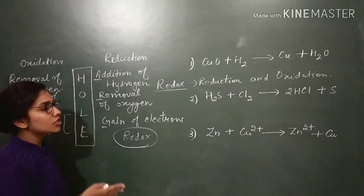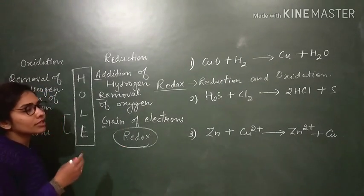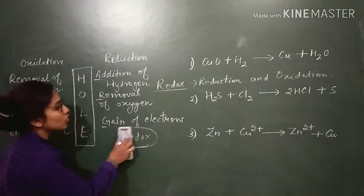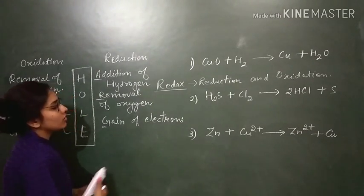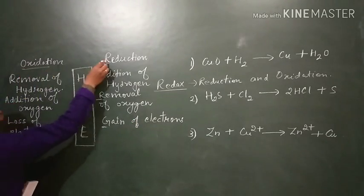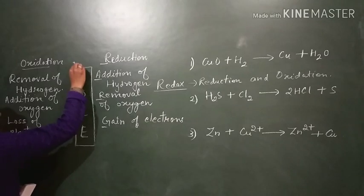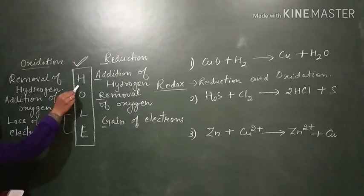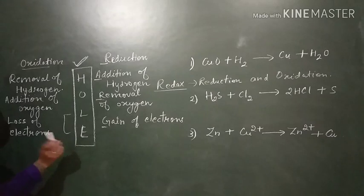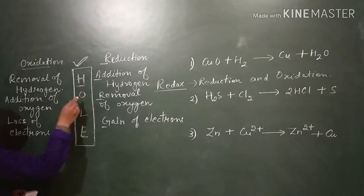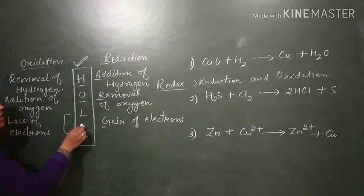In a redox reaction, reduction and oxidation are always occurring together. You can understand these two terms using a simple word: HOLE — H-O-L-E. H represents hydrogen, O represents oxygen, and L-E represents loss of electron.